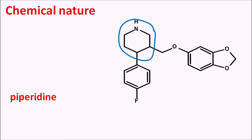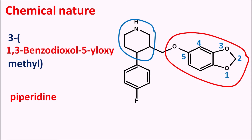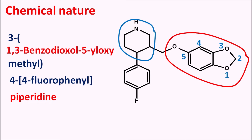The piperidine has an attachment at the third position — a methyl group — which is further attached to a heterocyclic ring system through an oxygen bridge. Giving the numbering starting from oxygen: 1, 2, 3, 4, 5. It is attached at the fifth position through oxygen, and the ring system is benzodioxole, where oxygens are present at the first and third positions — written as 1,3-benzodioxol-5-yloxy. Similarly, at the fourth position of the piperidine ring, a para-fluorophenyl group is present — written as 4-(4-fluorophenyl). That is the complete name of paroxetine.